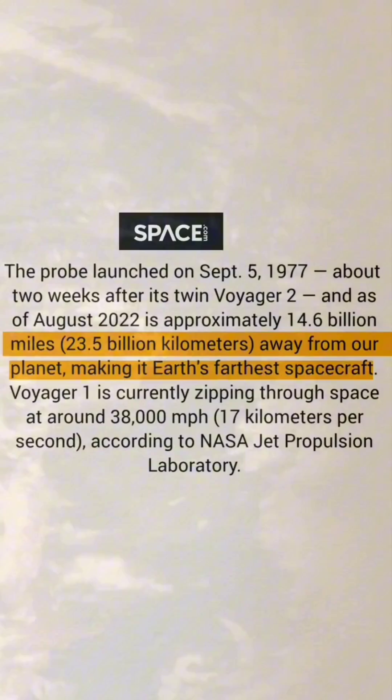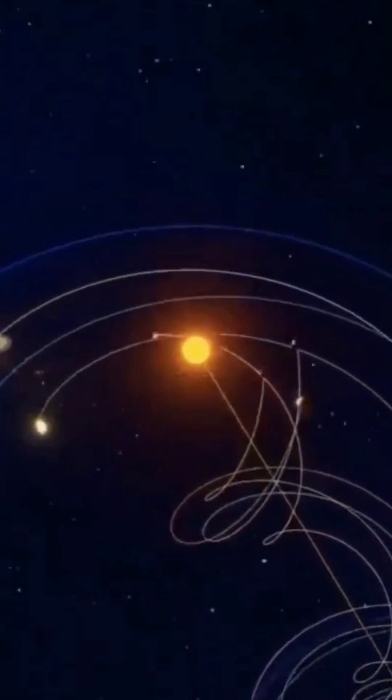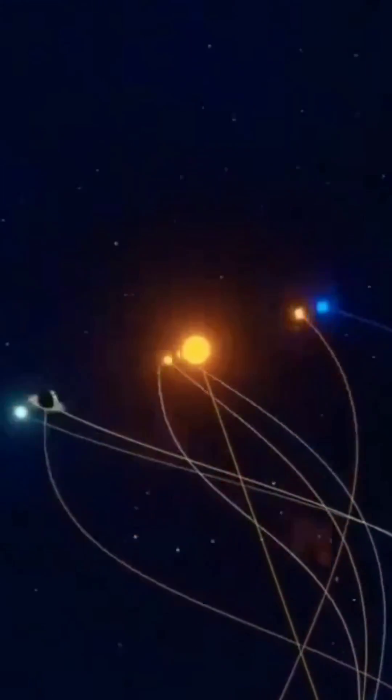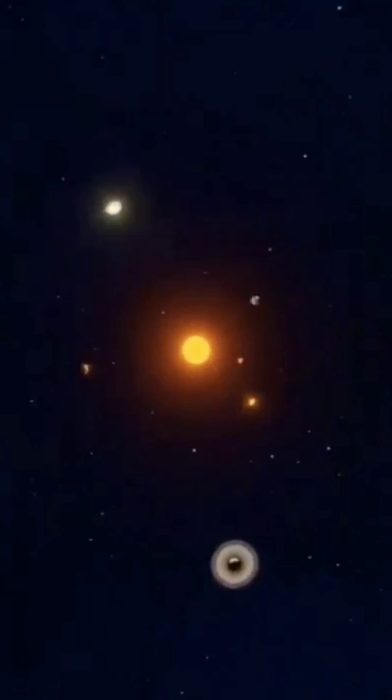Voyager 1 left Earth 45 years ago, but it is still affixed to the sun gravitationally. The sun and the entirety of the solar system is now 5,790,000,000,000 miles away from the location or astronomical coordinate that it occupied 45 years ago.